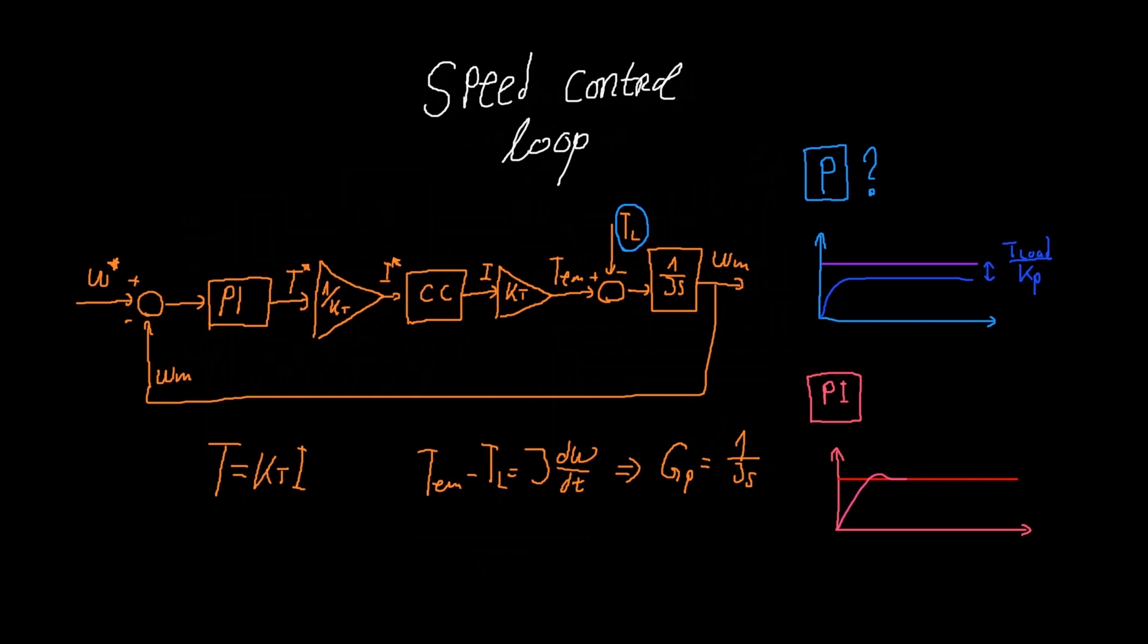So the proportional gain is going to increase the speed of the controller and integral gain is going to help it achieve zero steady state error. In order to derive the values of the proportional and integral gains of the PI controller, we can take a look at the closed loop transfer function.